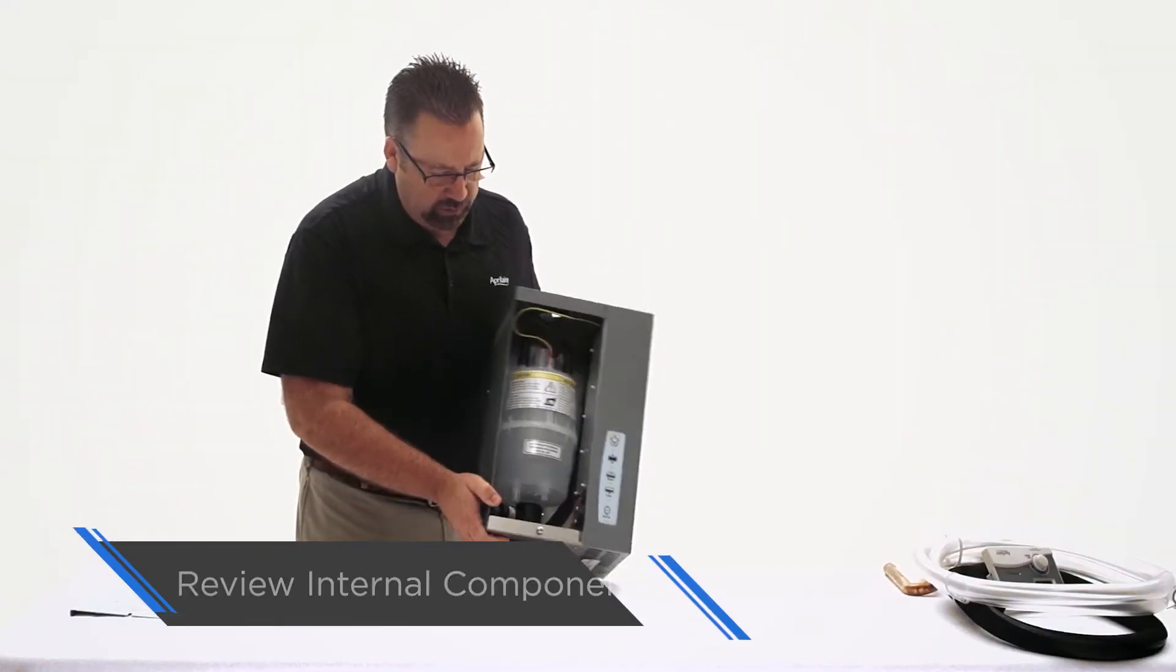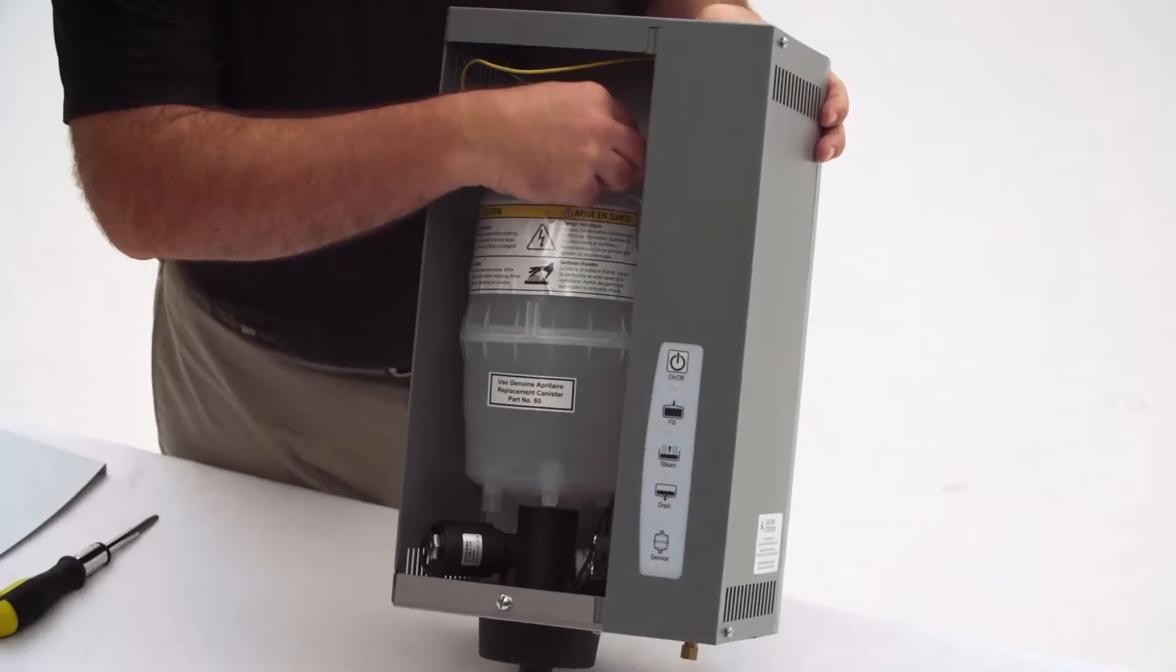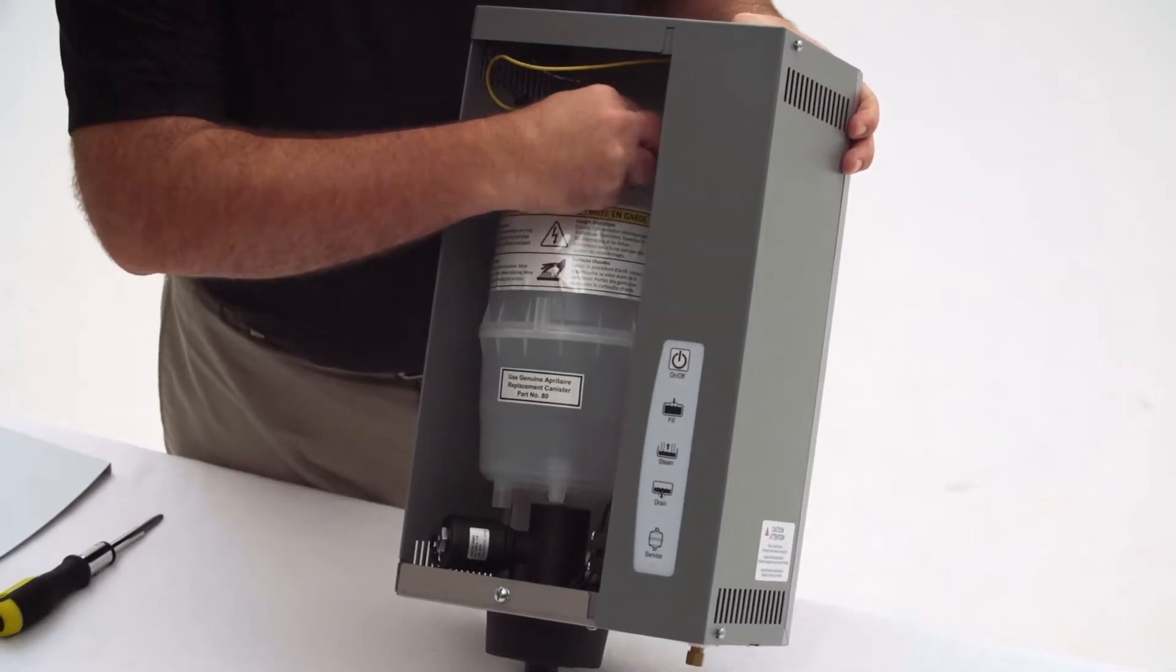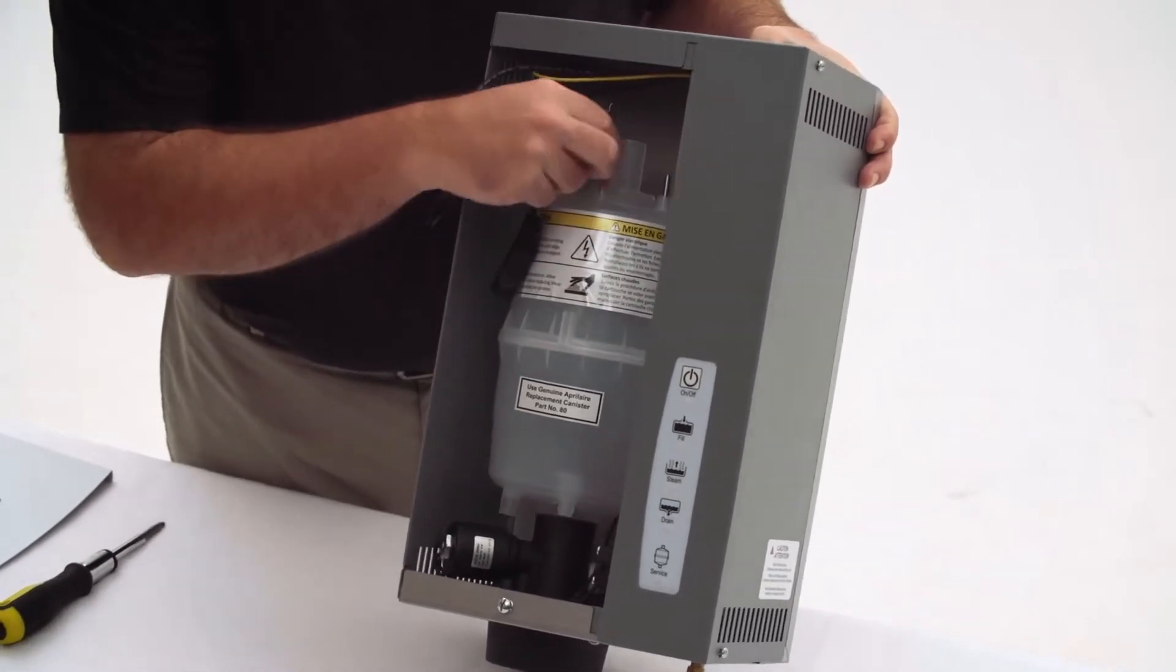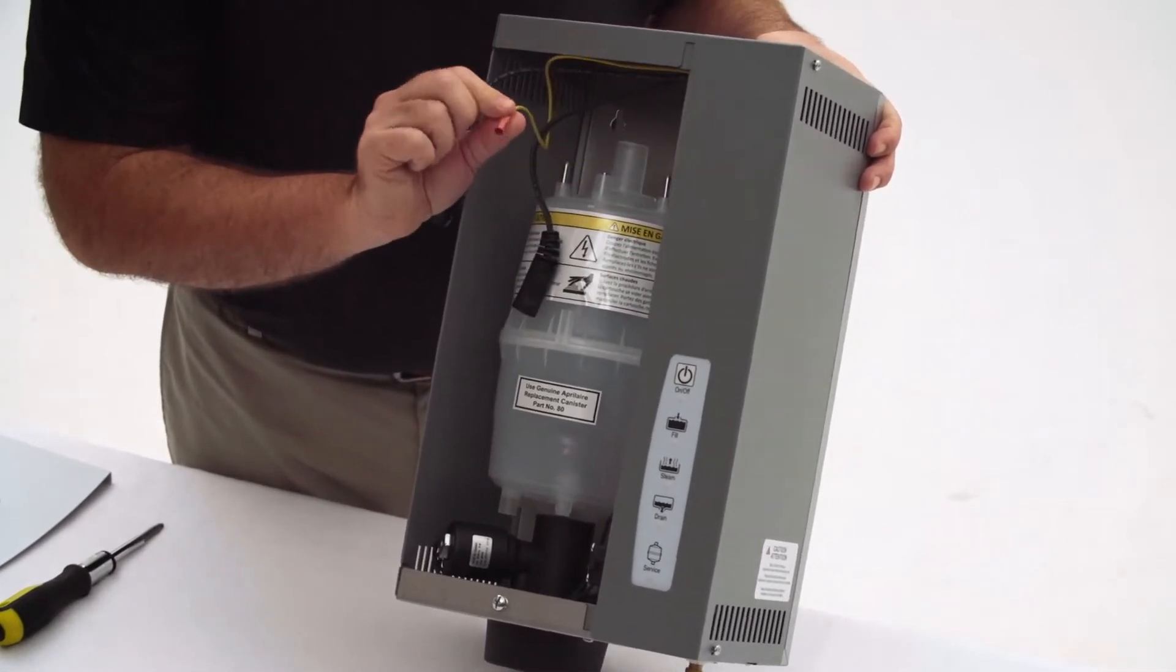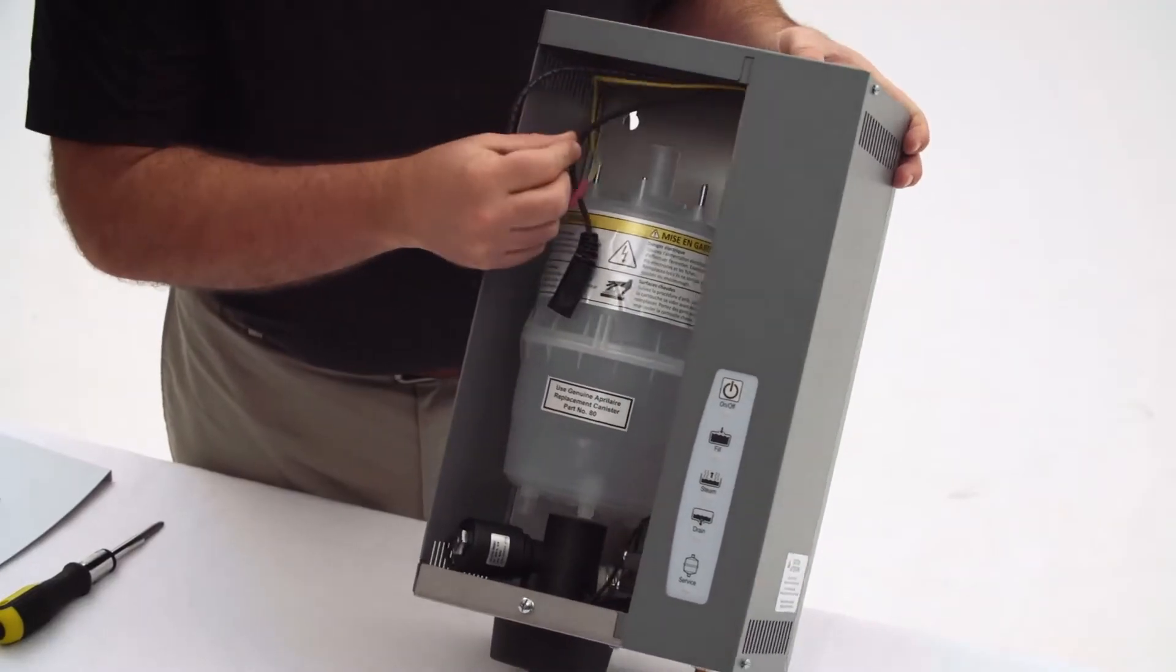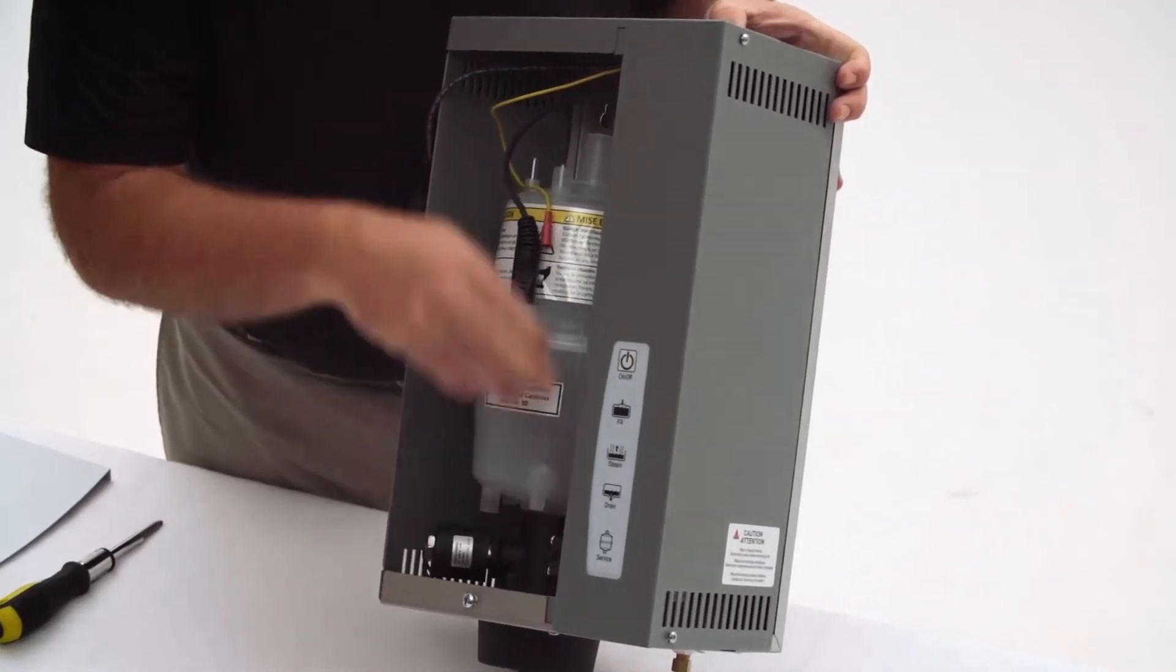Inside of the unit you'll see the steam canister itself. On top of the canister there are two electrode wires, you can pull those off. There's no polarity so they can be put back in either position. High water pin which is a different size pin so you can't get that mixed up, very simple, and then the canister itself.